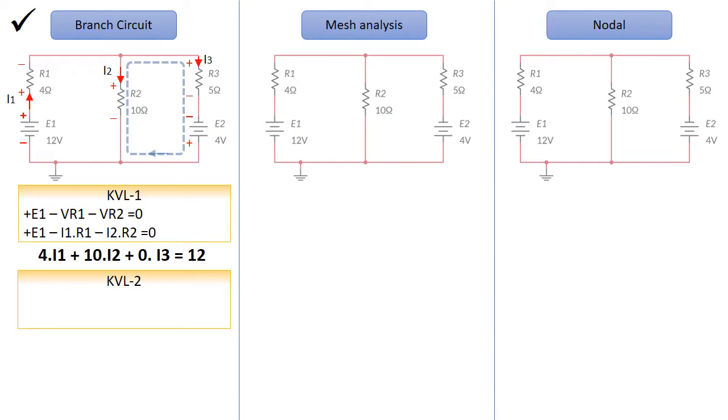After that, writing Kirchhoff voltage loop in the second loop, we will start from VR2, it becomes plus VR2, minus VR3, plus E2, equal to zero. Then we will write down the value of VR2 and VR3, and you can see this is the second equation here.